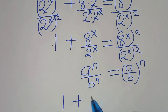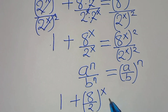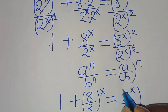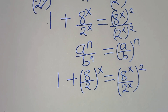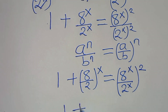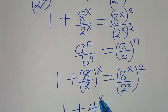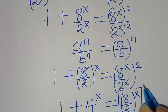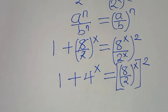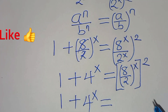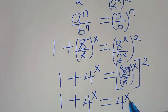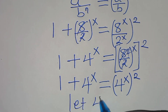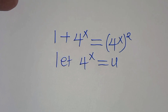So now we have 1 plus (8 over 2) raised to the power of x, equal to (8 to the power of x divided by 2 to the power of x) everything raised to the power of 2. Applying this property gives 1 plus (8 divided by 2) to the power of x — that is, 1 plus 4 to the power of x — equal to 4 to the power of x, everything raised to the power of 2.